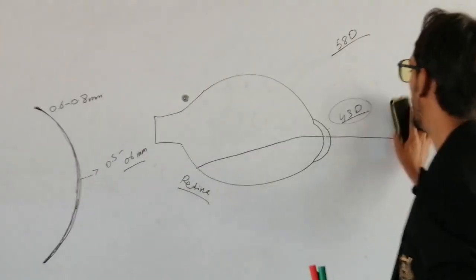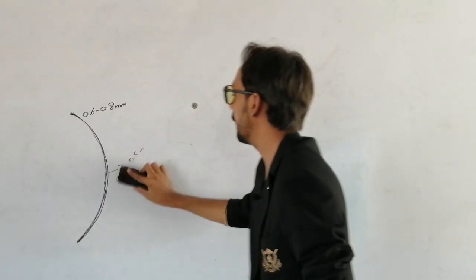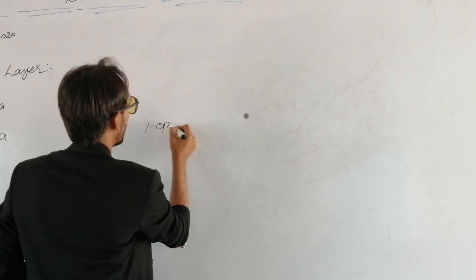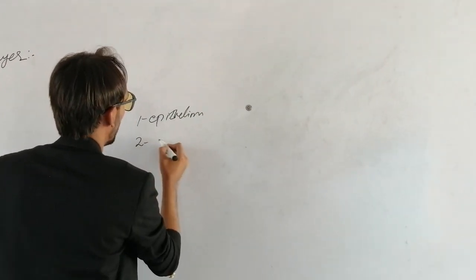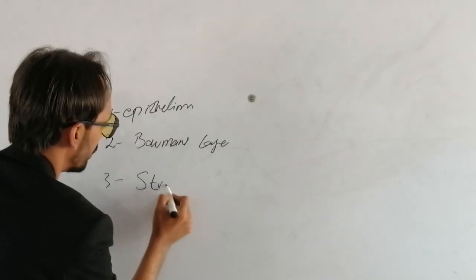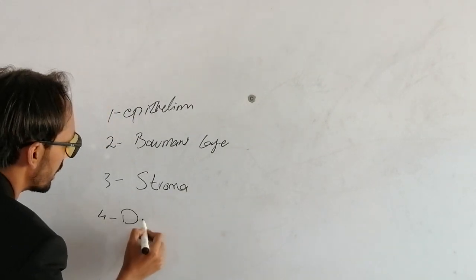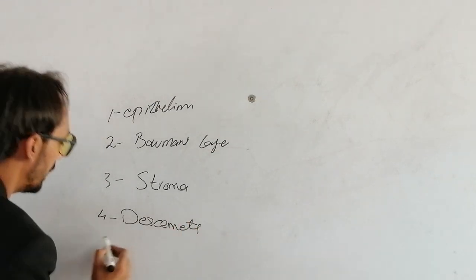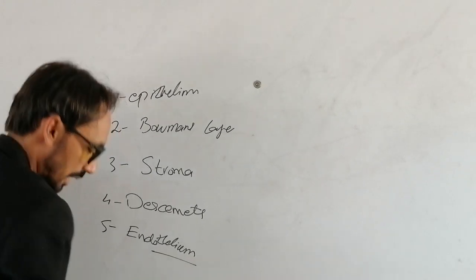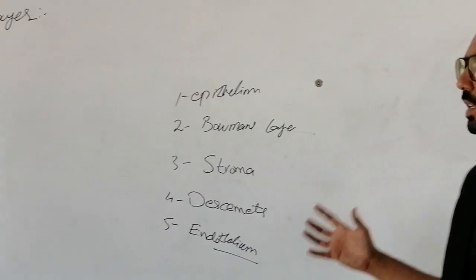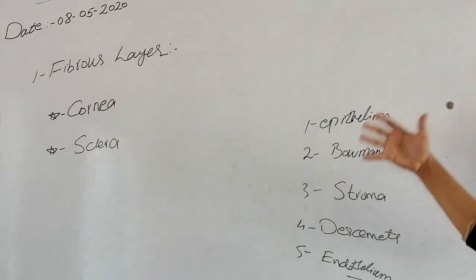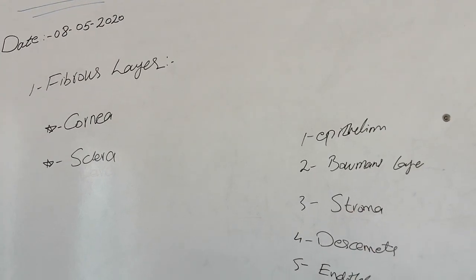Now we will discuss the different layers of the cornea. The first layer is called the epithelium. The second one is Bowman's layer. The third one is the stroma of the cornea. The fourth one is Descemet's membrane — the T is silent. And the fifth and last one is the endothelium. We will discuss these five layers in detail when we cover the cornea precisely.